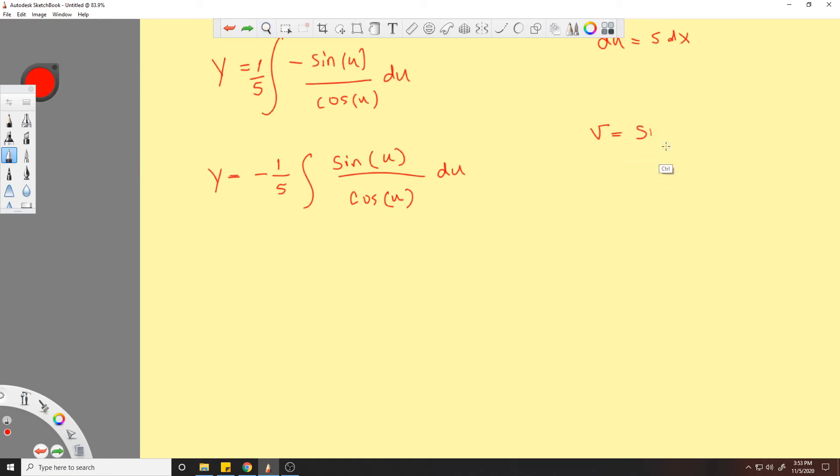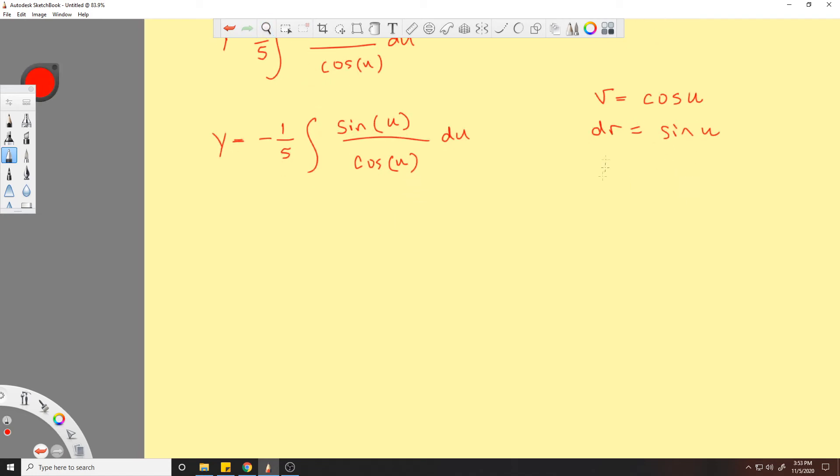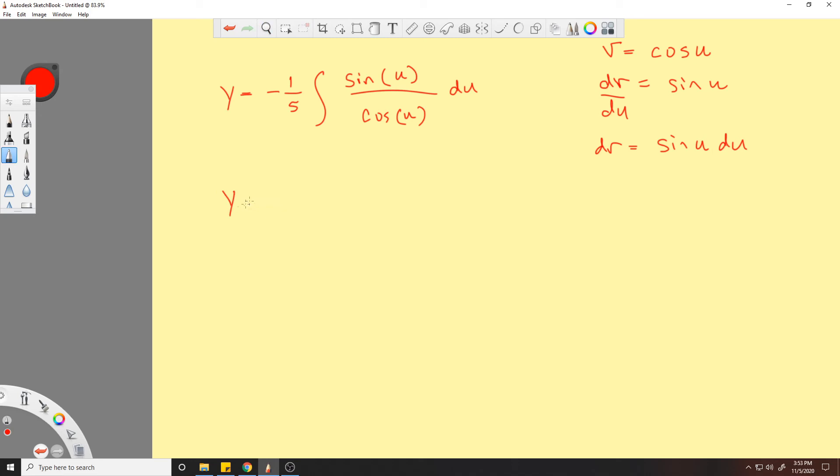I know u is close to v. dv would equal sine of u. So that means dv is equal to sine u du. And because of that, and because of that, you now get y equals negative 1/5.